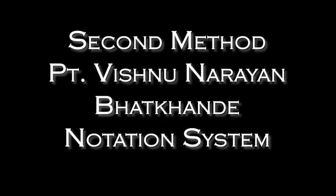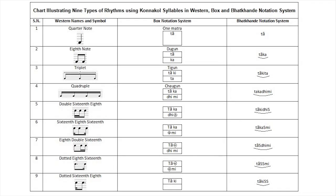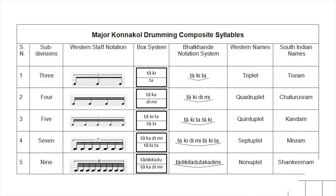Second method: the Bhatkhande notation system. This notation system was developed by Pandit Vishnu Narayan Bhatkhande. He was a scholar, musicologist, author and musician himself. Although this notation system can notate melodies equally well, in this video I'll only illustrate rhythmic aspects to notate mnemonic drumming syllables. Similar to the box system, a single syllable represents a quarter note but without a box. If there is a curved vertical underline below two syllables, then they are identified as 8th notes. For triplets, 3 syllables; for 16th notes, 4 syllables are underlined with a curved vertical line. The letter S or simply a dash indicates rest.